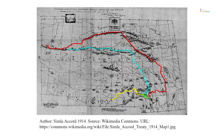Let us look at the two of them. First, let us look at the eastern sector. This is a map from the Shimla Convention of 1914. This convention was signed by the Tibetan government and the British government, and they agreed on a boundary between Tibet and India in the eastern sector.